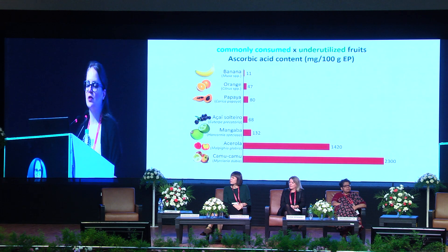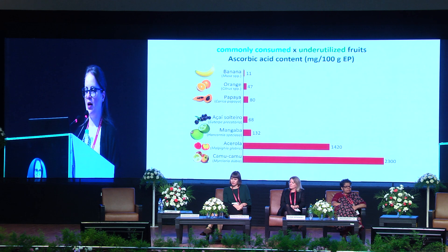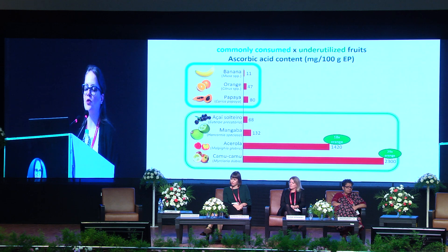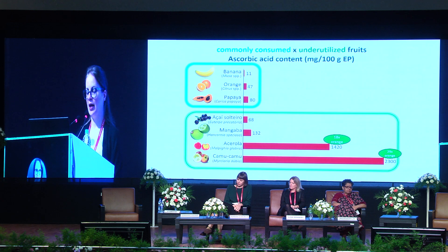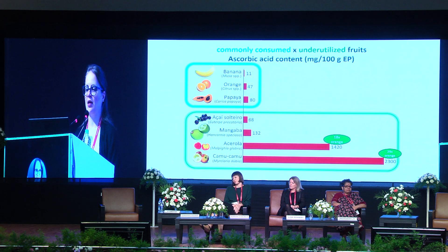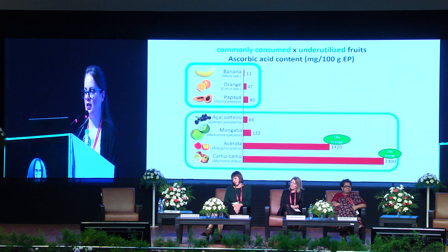Now I will give some examples showing the content of commonly consumed foods in Brazil against underutilized foods. Here we have the ascorbic acid content for some fruits. Among the most consumed fruits, we have banana, orange, and papaya. We can see similar and much higher content in many underutilized fruits. Even taking orange as a reference — normally promoted as a good source of ascorbic acid — acerola and camu camu have 18 and 29 times the content of orange, respectively.